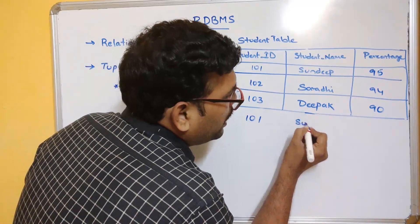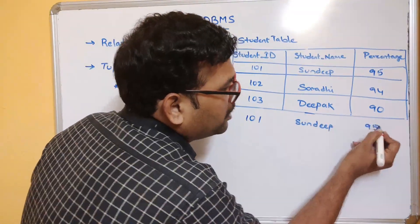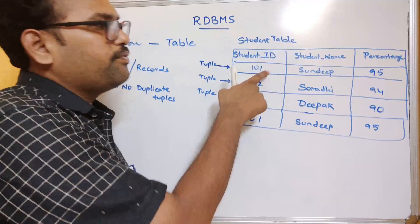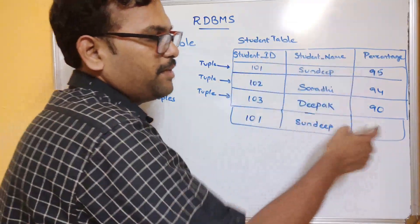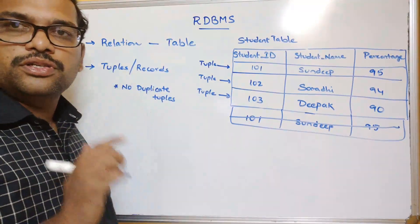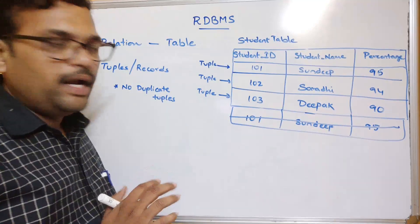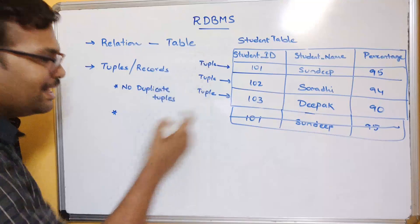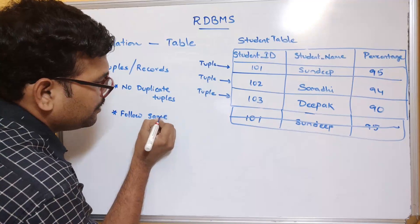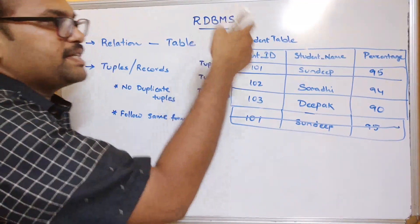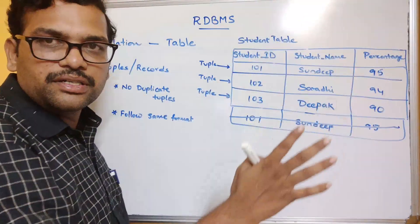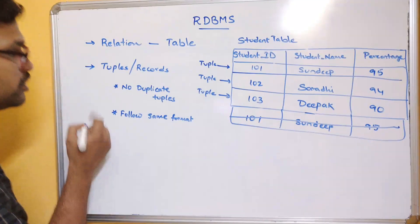For example, if there is a fourth row with 101, Sandeep, and 95 — the same values as the first row — this should not be accepted. No duplicate tuples should be available. Also, all tuples should follow the same format. That means every student record should follow the same structure: student ID, student name, and percentage.